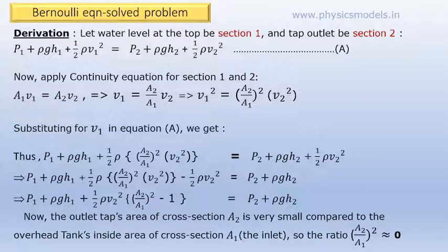We can also solve the numerical by directly applying the end equation, but I have derived it here to make you more comfortable to know what is happening. We write the Bernoulli's equation and we use the continuity equation for section 1 and section 2. A1v1 is equal to A2v2.